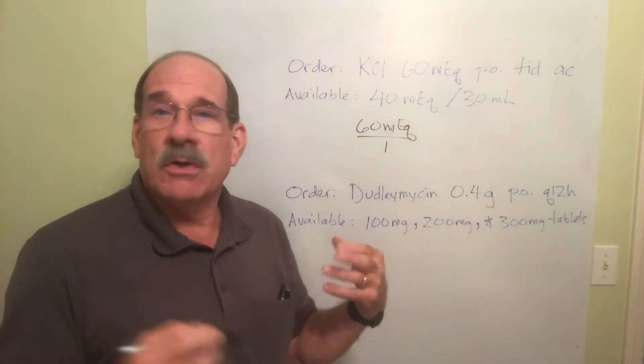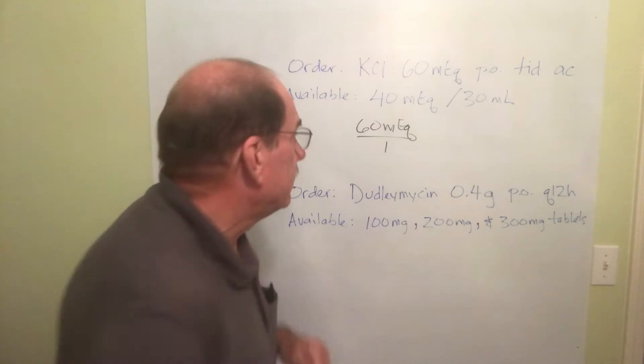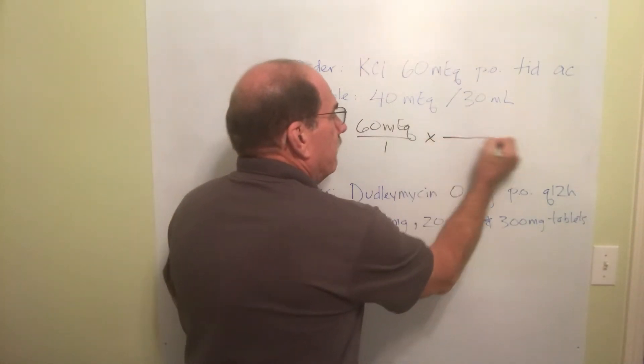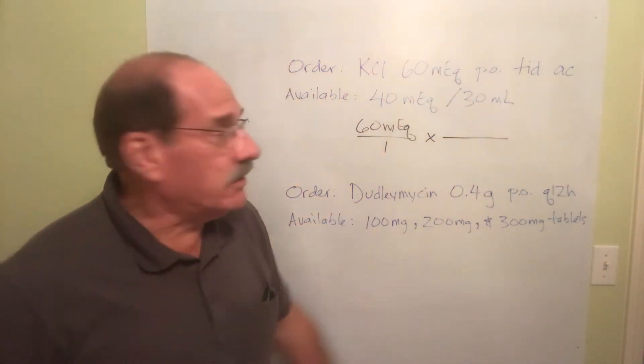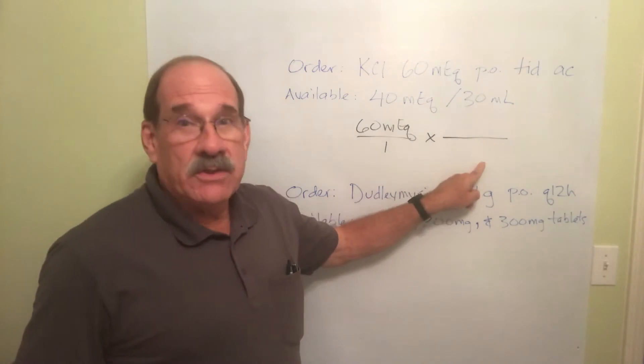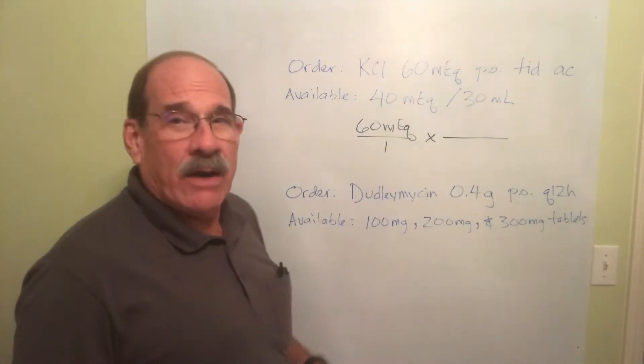Times our second fraction is going to be the dosage strength, the supply dosage. Well, going backwards, we have 40 milliequivalents is in every 30 milliliters of fluid.